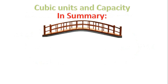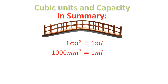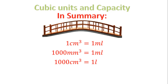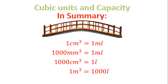In summary, before we do two other examples, let's review our four bridges. First bridge: one centimeter cubed equals one milliliter. Second bridge: a thousand millimeters cubed equals one milliliter. Third bridge: a thousand centimeters cubed equals one liter. And the fourth bridge: one meter cubed equals a thousand liters. Those are our four bridges from cubic units, or volume, to capacity.